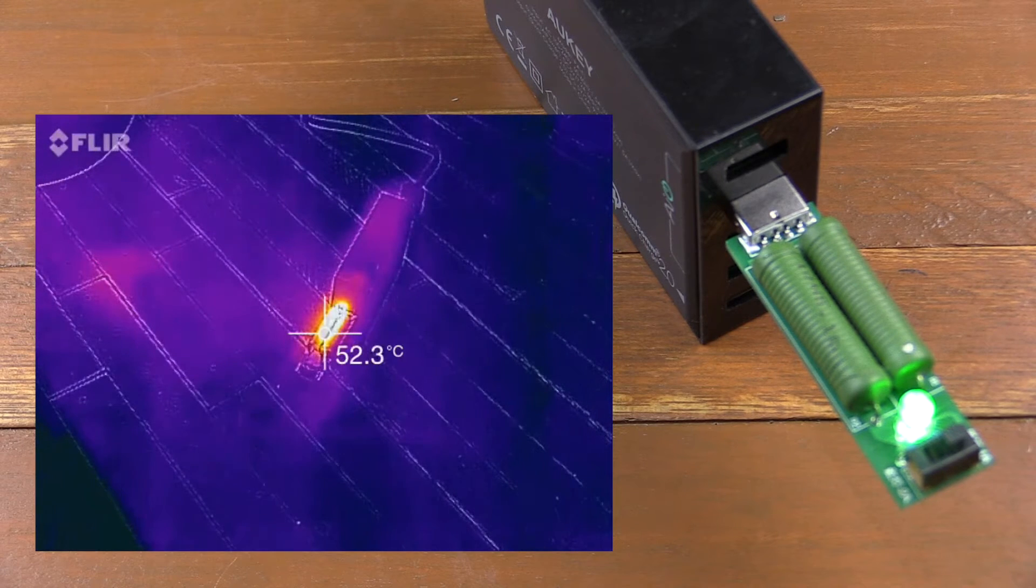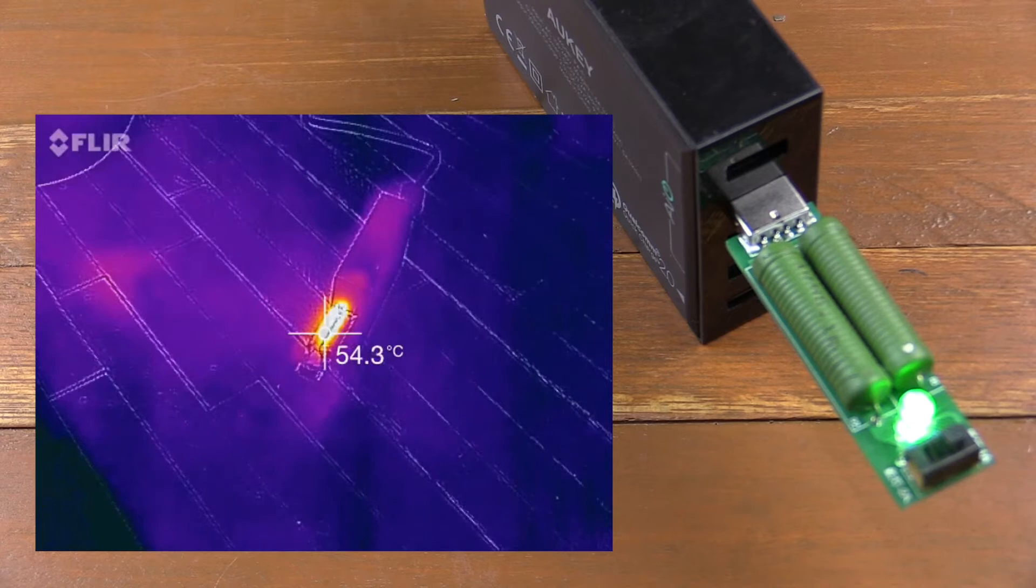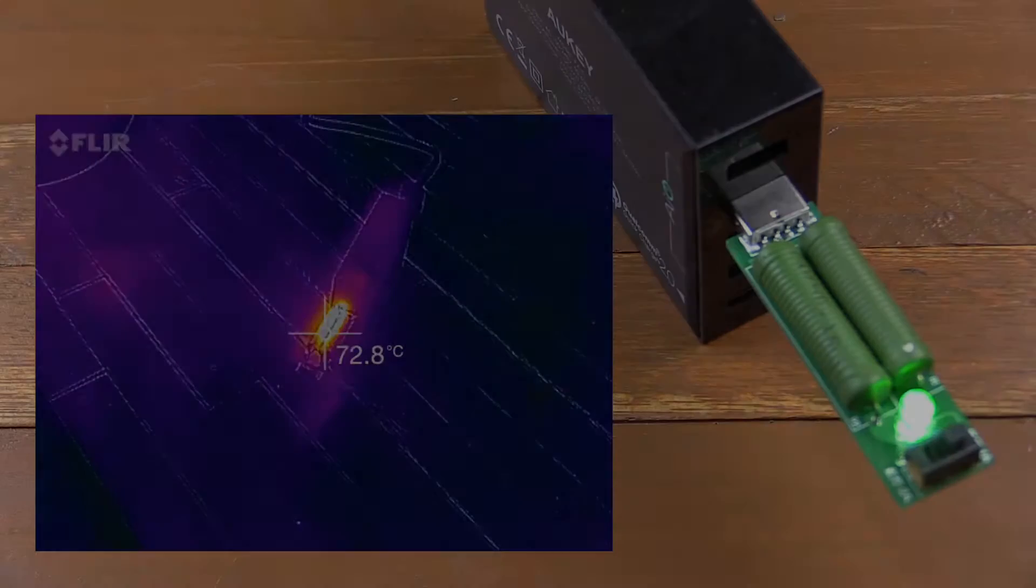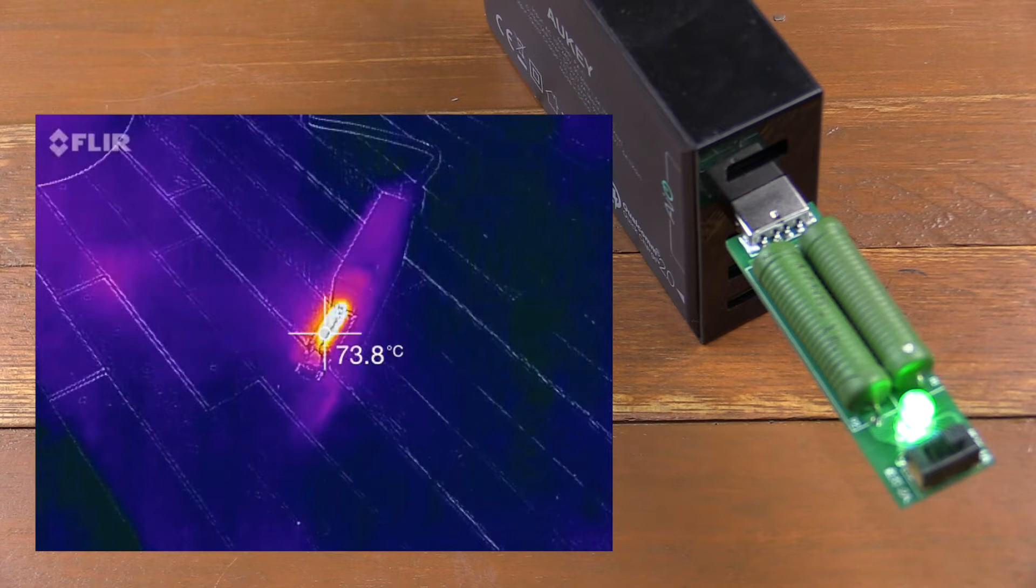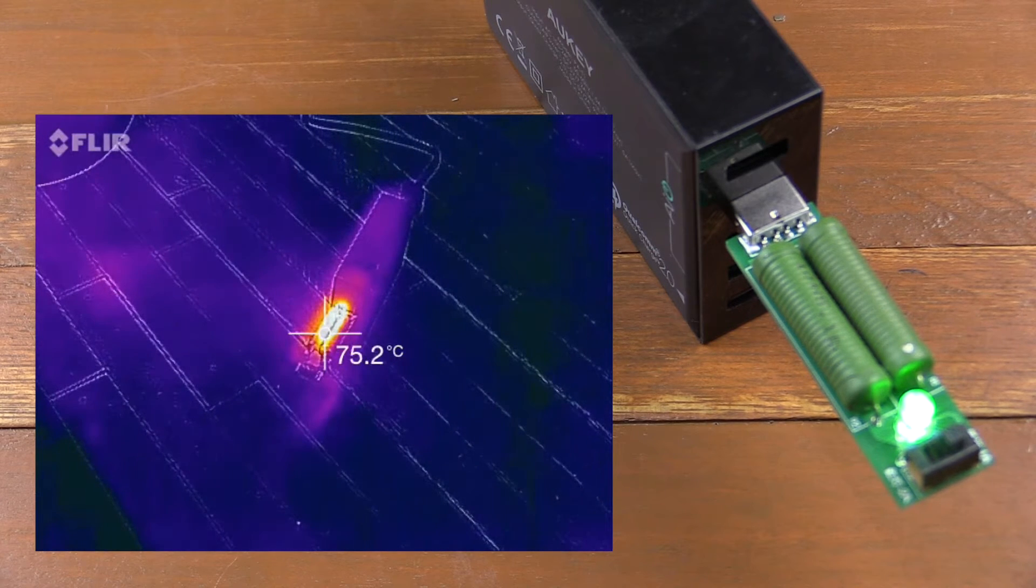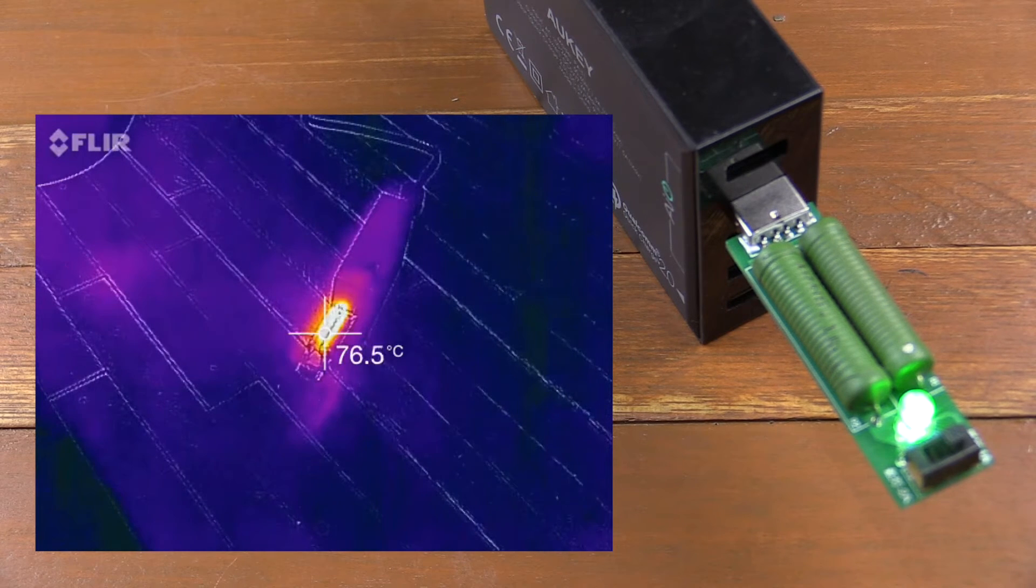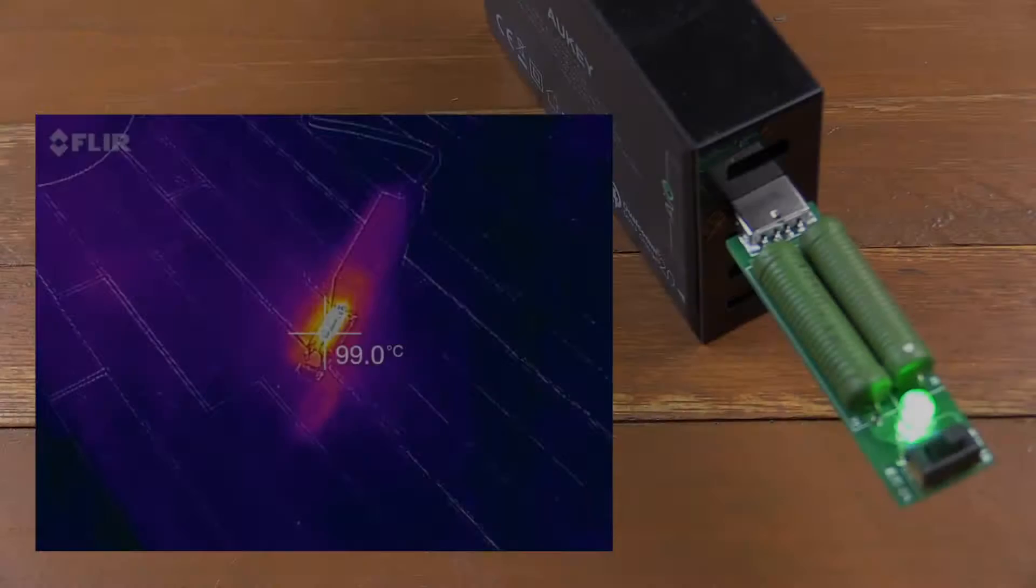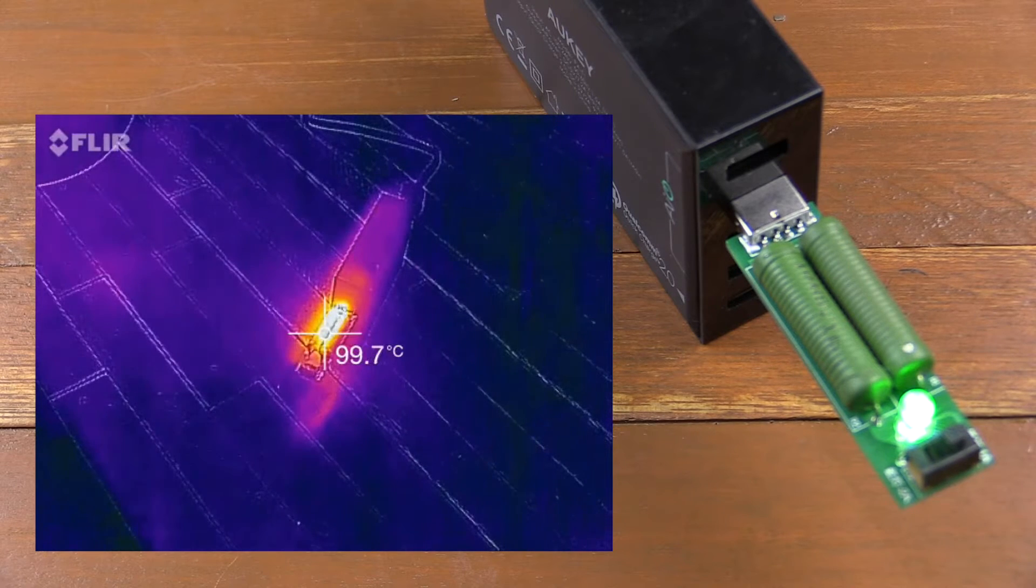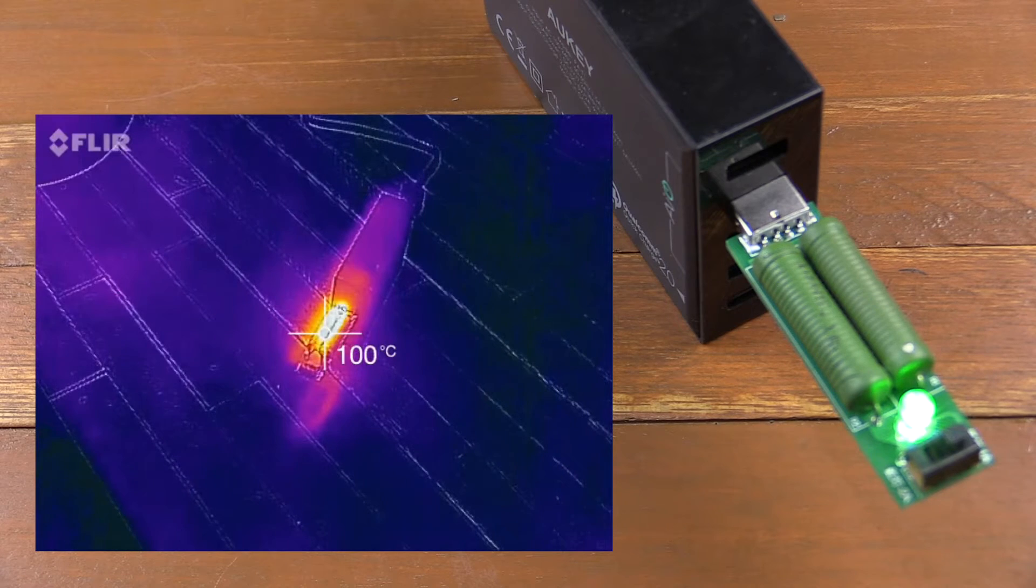It's now been around 30 seconds and we're up to 52 degrees Celsius and it's rising pretty quickly. We're now around one minute in and we're up to 73 degrees and I have a feeling we're going to keep going all the way up to 120 degrees Celsius which is the upper limit of my FLIR 1 thermal camera.